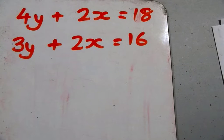4y plus 2x equals 18. 3y plus 2x equals 16.